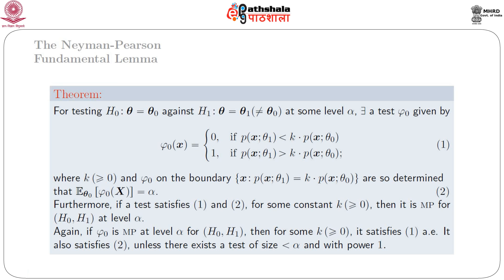We state a theorem called the Neyman-Pearson Lemma, which is the fundamental lemma of Neyman-Pearson. For testing H naught: theta equals theta naught — where theta naught is a single point — against H1: theta equals theta1, which is also a single point differing from theta naught. A test phi naught is given by: phi naught(x) = 0 if p(x; theta1) < k · p(x; theta naught), and phi naught(x) = 1 if p(x; theta1) > k · p(x; theta naught), where k is non-negative and E_{theta naught}[phi naught(x)] = alpha.